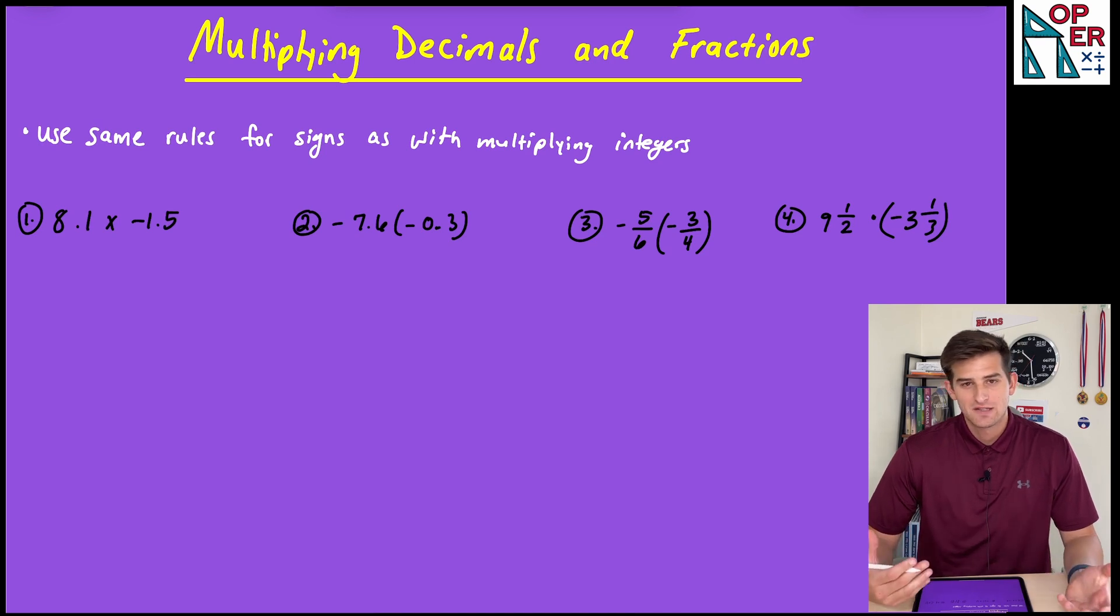As far as rules for multiplying decimals and fractions, in terms of the sign, we can think about the same rules we use when we multiply or divide integers. If we are multiplying or dividing with the same sign, then our solution is going to be positive. So negative times a negative would be positive, positive times a positive also positive. And if we have alternating signs, so one number is negative, one number is positive, then our answer should be negative.